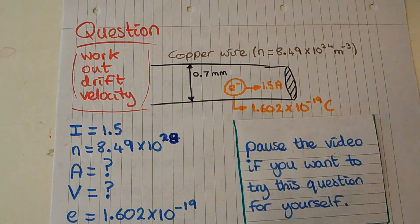Just in case we forgot or it wasn't on your equation sheet, we're given the elementary charge of an electron which is 1.602 times 10 to the minus 19. Finally we are told that the diameter of the wire is 0.7 millimeters.